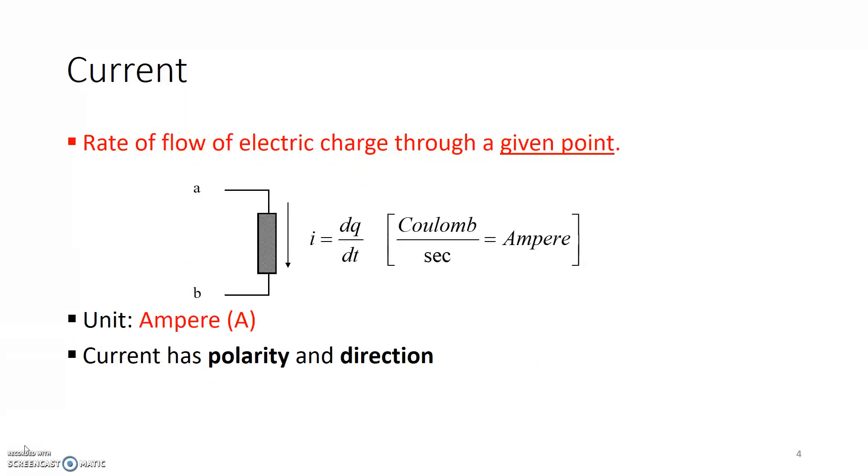So electrical current is basically the measure of the rate of flow of electrical charge through a given point. Whenever we're talking about current, we are always talking about a flow of charge per unit time through an element. So here's an example of an element, and the current is flowing from direction A to direction B. The unit of current is amperes, or amp, or we simply abbreviate it as A. Current has both a polarity and a direction, so it has both magnitude as well as direction.